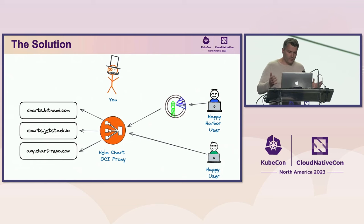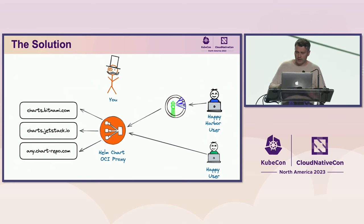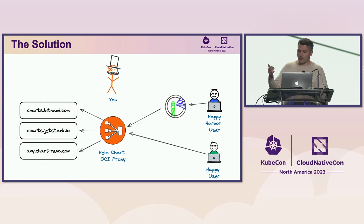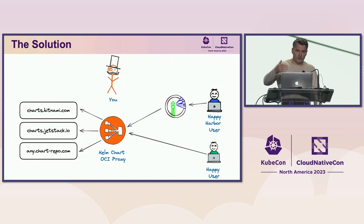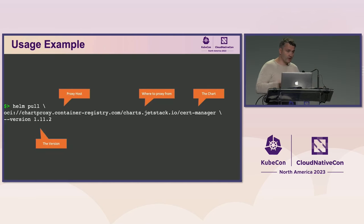This is the architecture, very simplified. We have the OCI proxy in the center. On the left side, we're talking to the traditional artifact transport mechanism, like you find on the internet. And on the right side, we have the OCI format that we provide. And this you can use then to directly address each artifact as an OCI artifact.